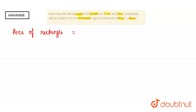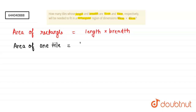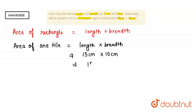Area of rectangle equals length into breadth. This is the formula of area of rectangle. So first we will find out the area of one tile. The area of one tile equals length into breadth. It is given in the question that the length and breadth of the tile is 15 centimeter and 10 centimeter. Multiplying 15 by 10 gives us the area of one tile to be 150 centimeter square.